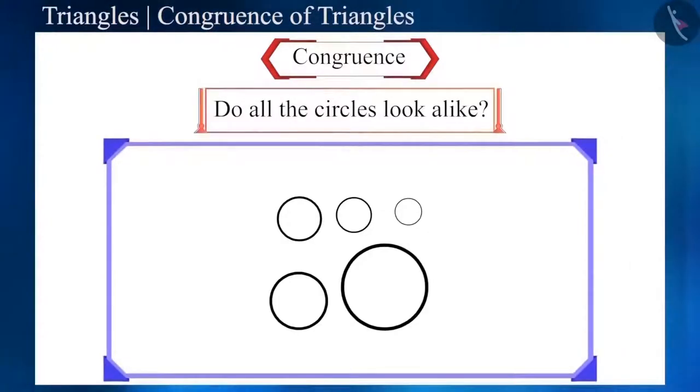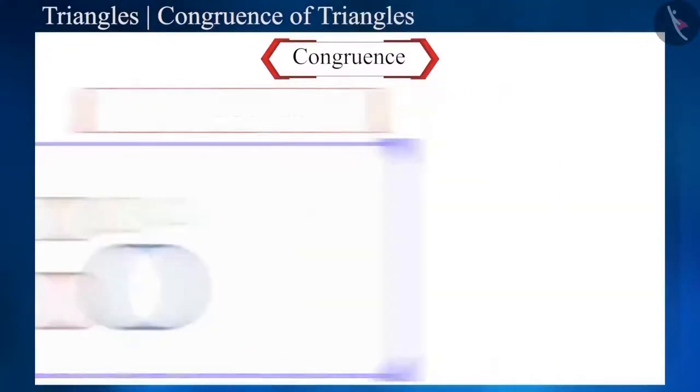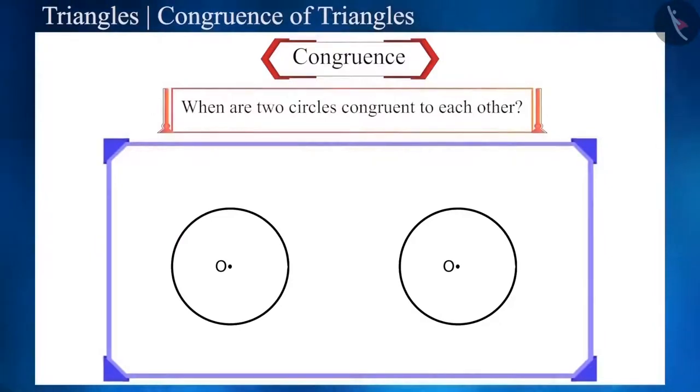Friends, do all circles look alike? All the circles appear to be round, but the only difference is that they can be bigger or smaller than each other. Can you tell when are two circles same or, let's say, congruent to each other?